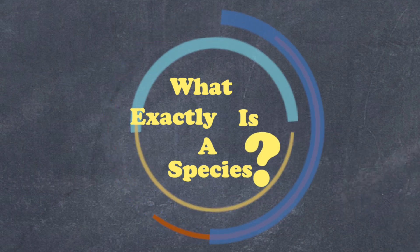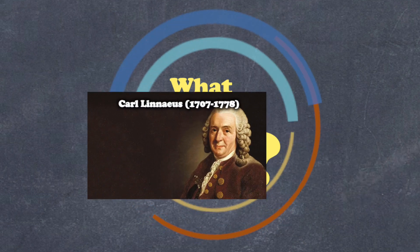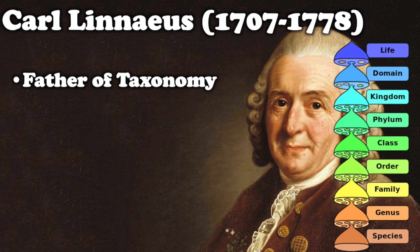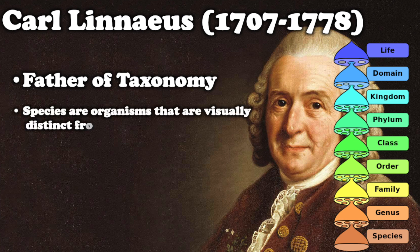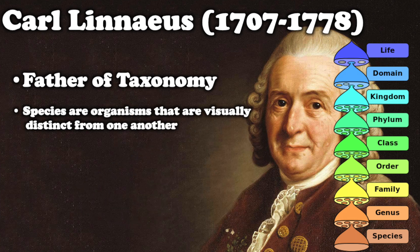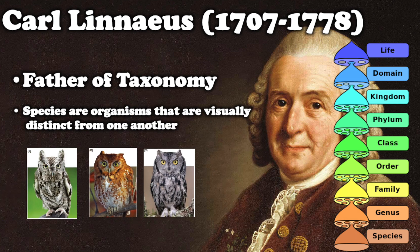For many people, including Carl Linnaeus — the guy that invented taxonomy — a species is just an organism that can be distinguished from another. Well, that's great if you're trying to tell a lion apart from a tiger, but that doesn't really help us with these owls.